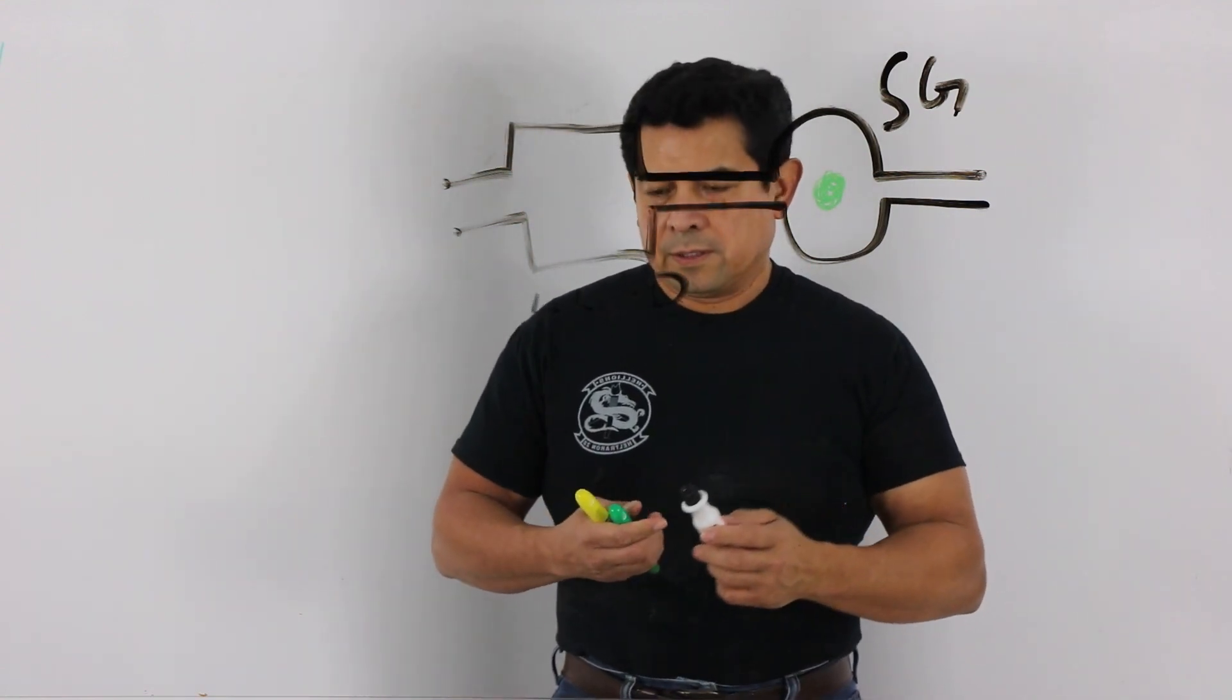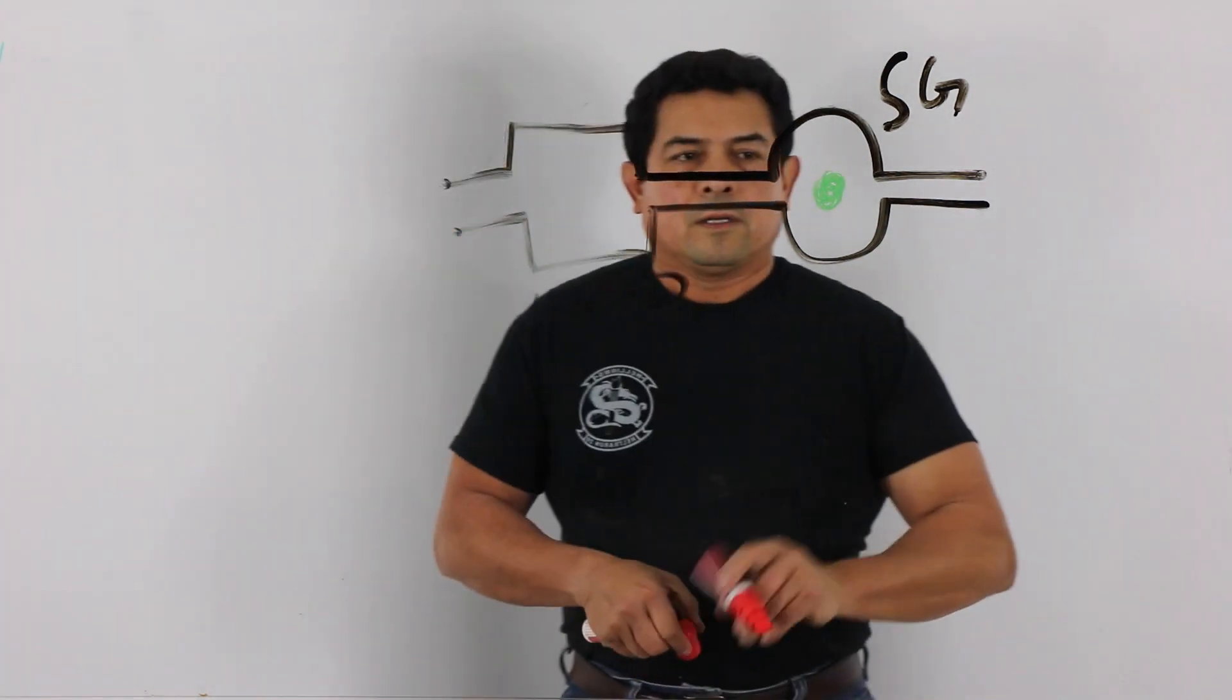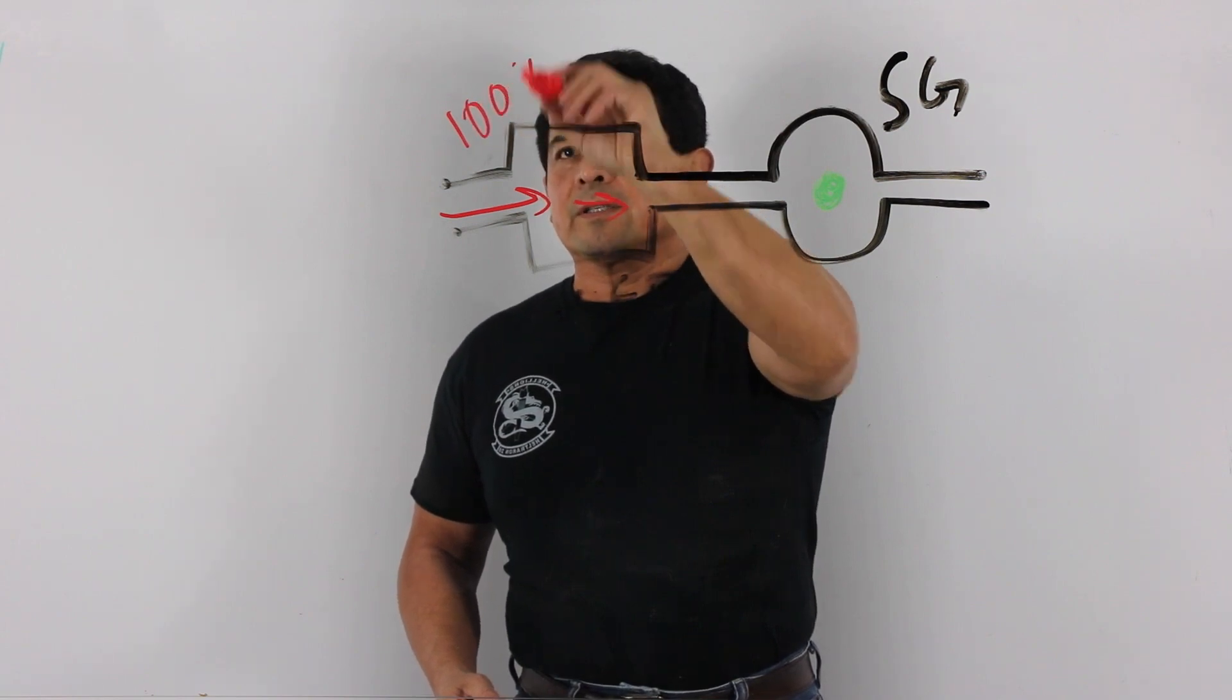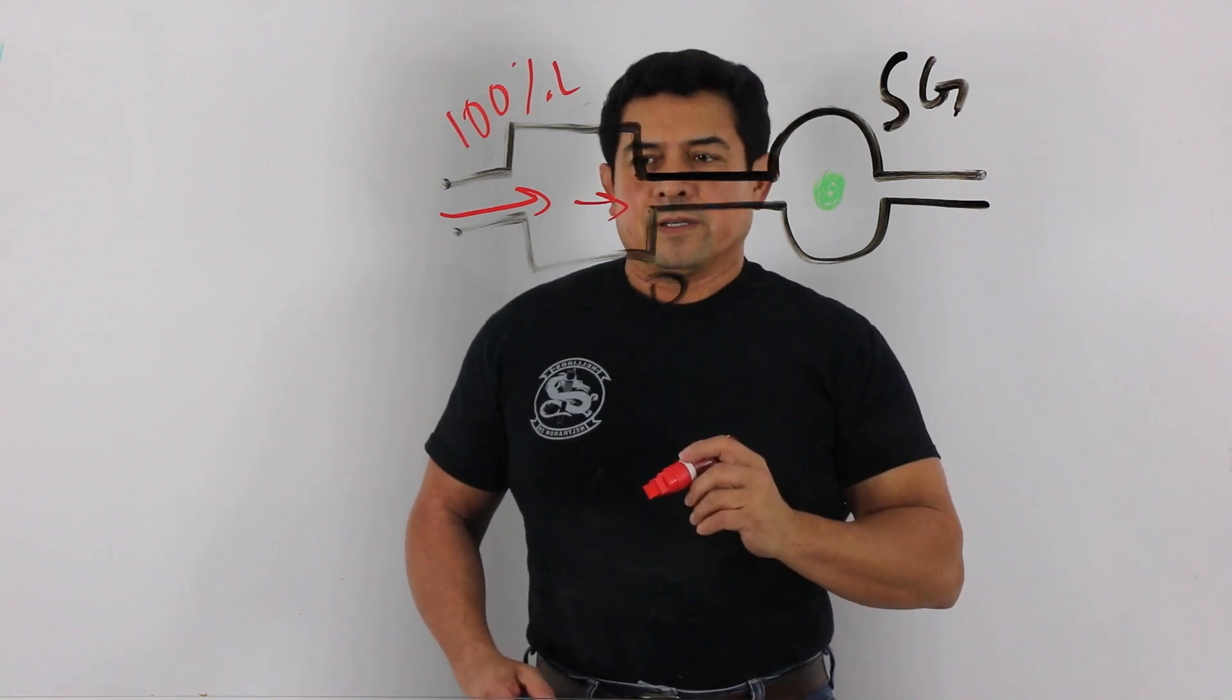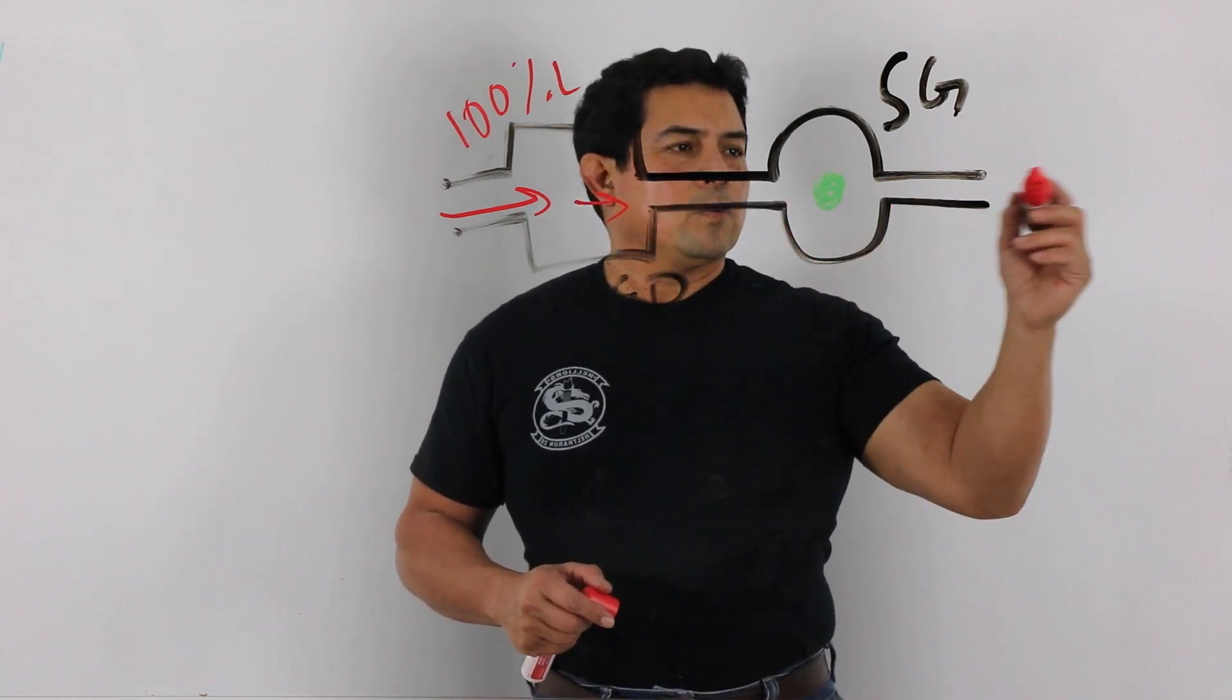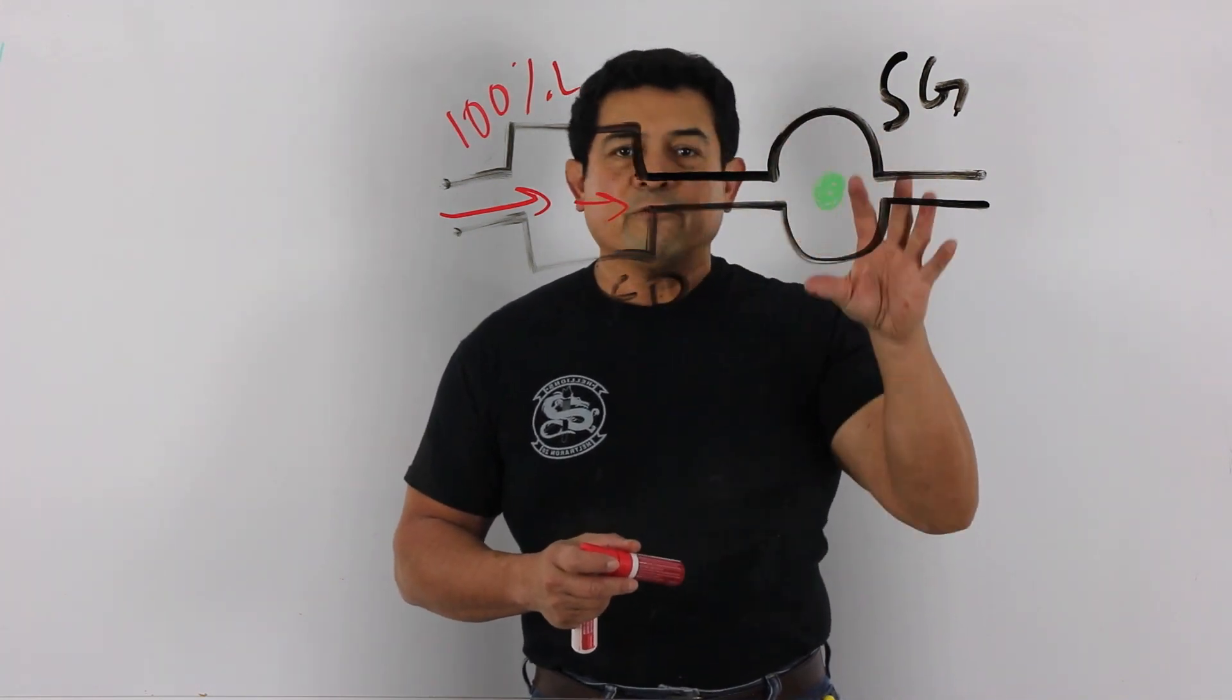But what happens here is you have the refrigerant that's going to be coming from the liquid line and this should be 100% liquid. If this dryer is okay and there are no problems with the dryer then we're going to have 100% liquid traveling through here. So hopefully the sight glass is going to be completely full of liquid.